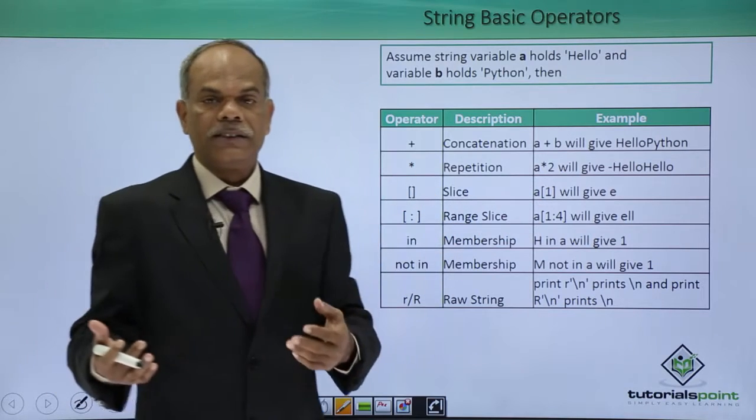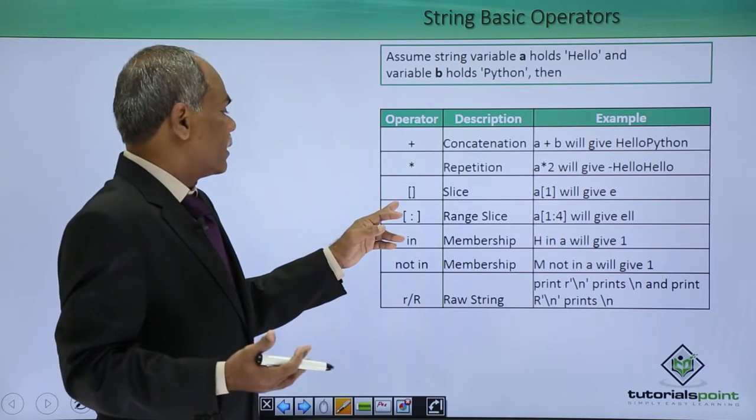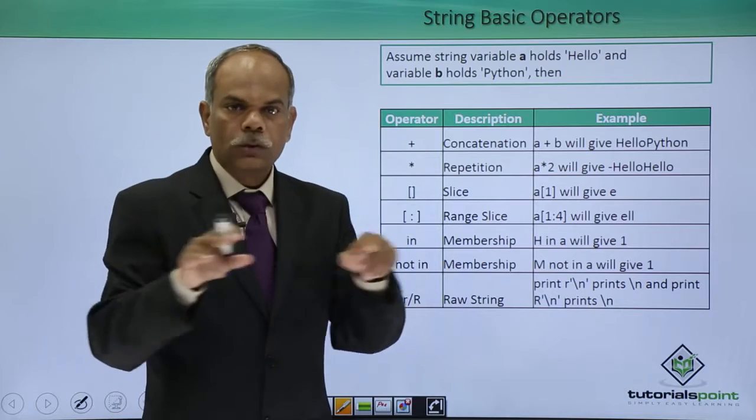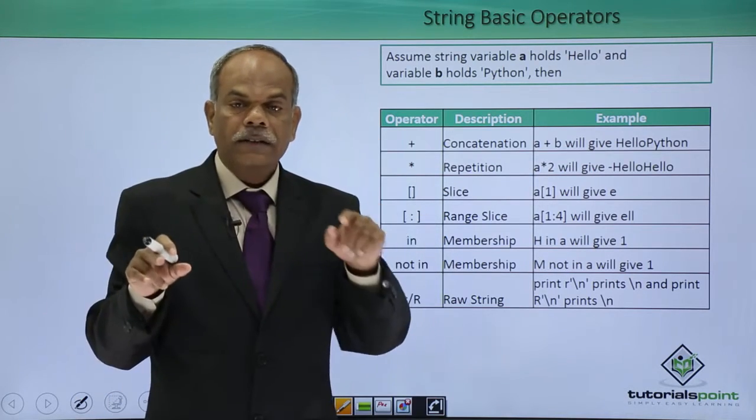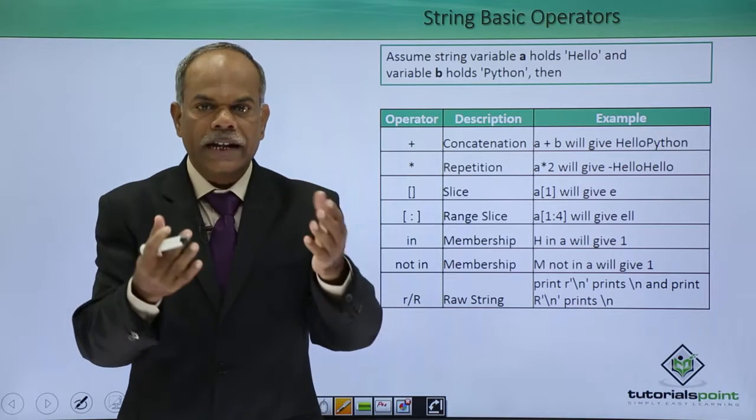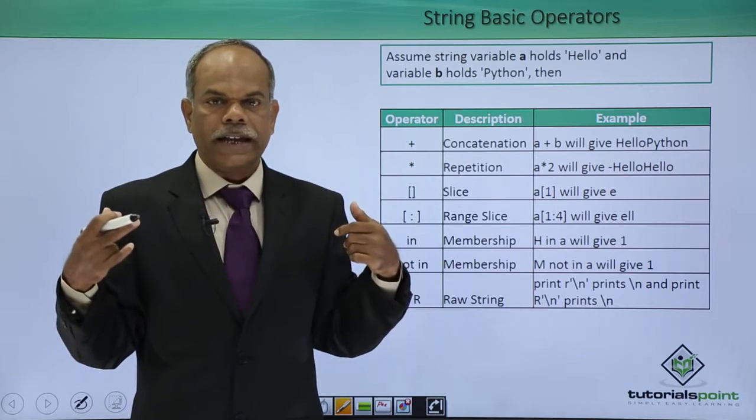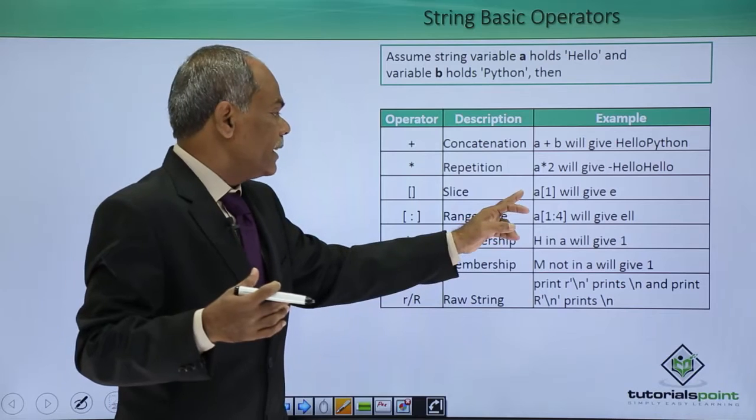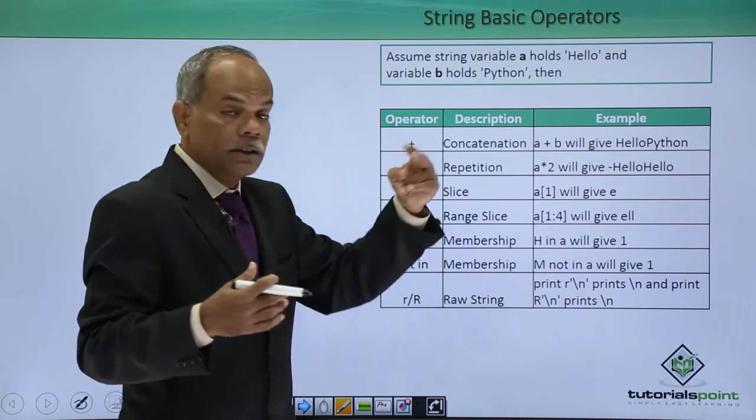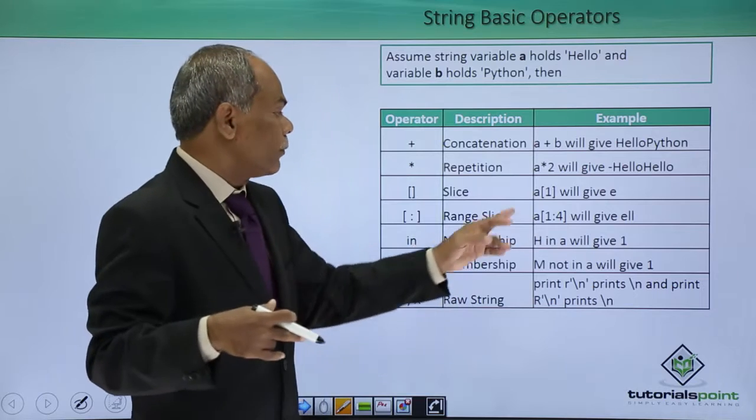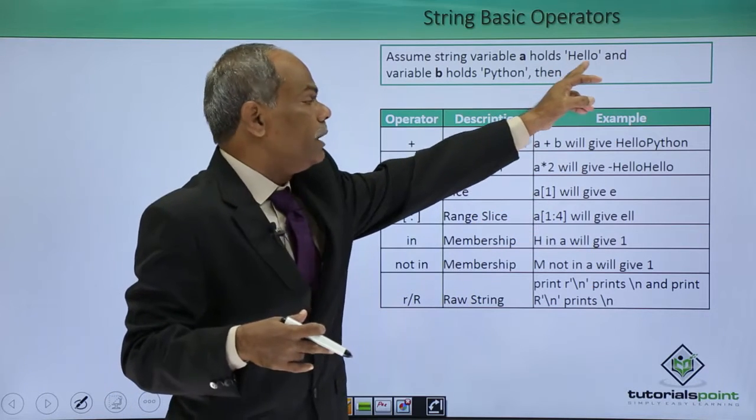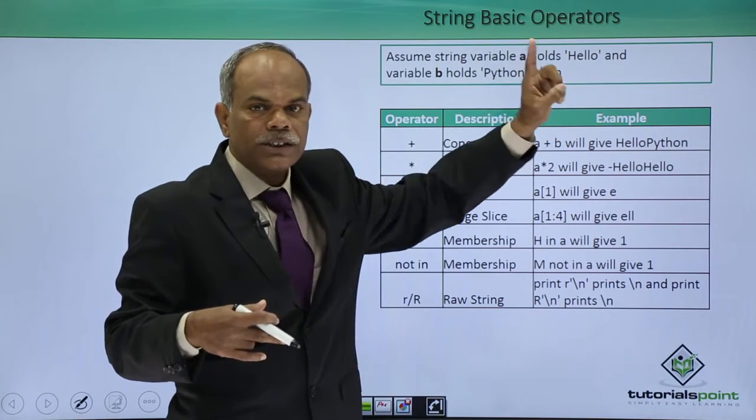These two are slice operators. The slice operator uses a square bracket. Inside the square bracket, you give the index of the character that you want to slice out of the string. So if I say a 1, the string is a sequence starting with 0 index, therefore a 1 will give me e, e being the character at index number 1.